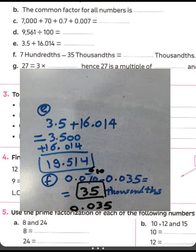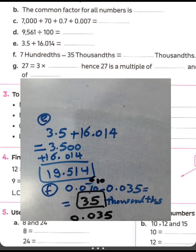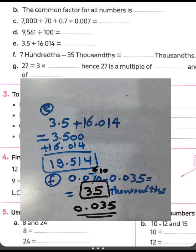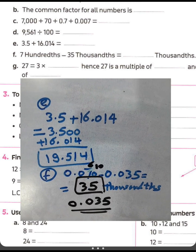Question letter G: twenty-seven equals three times the blank space, hence twenty-seven is a multiple of the blank space.